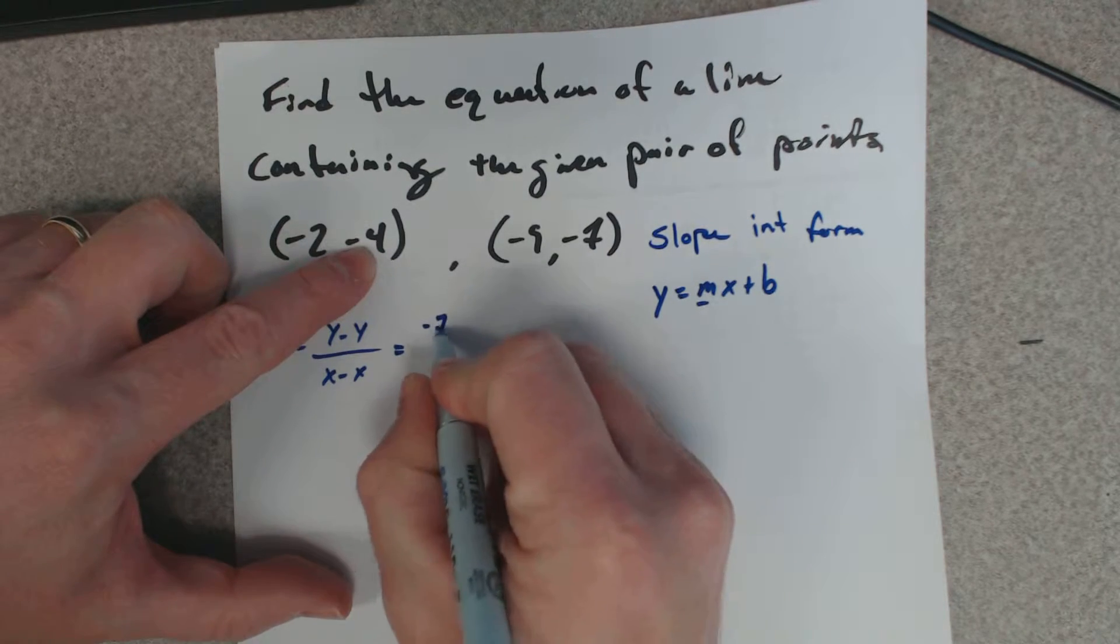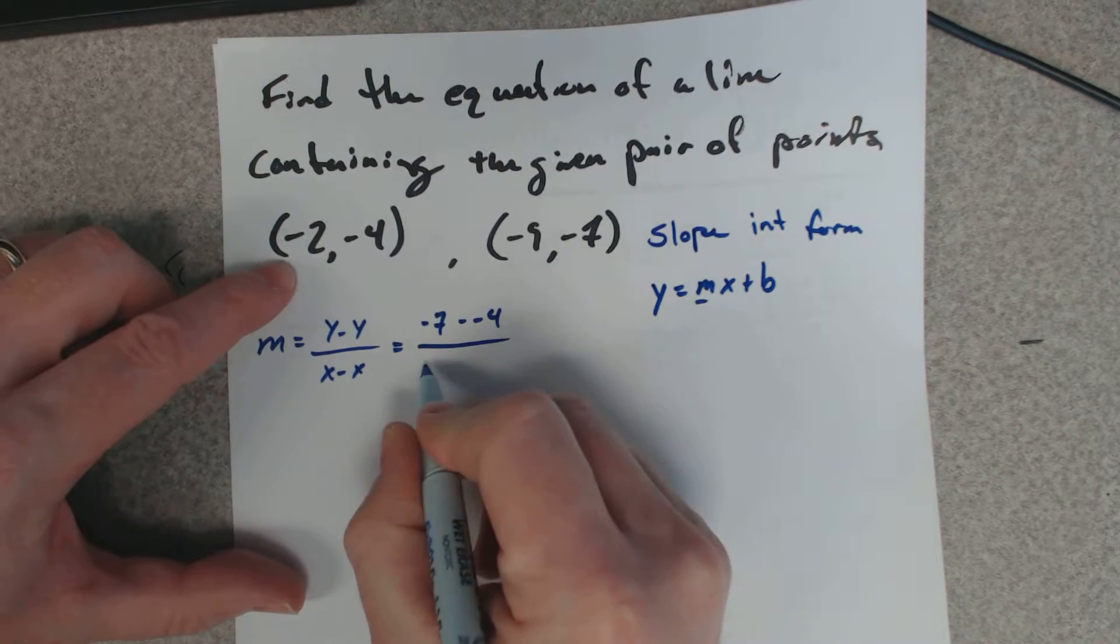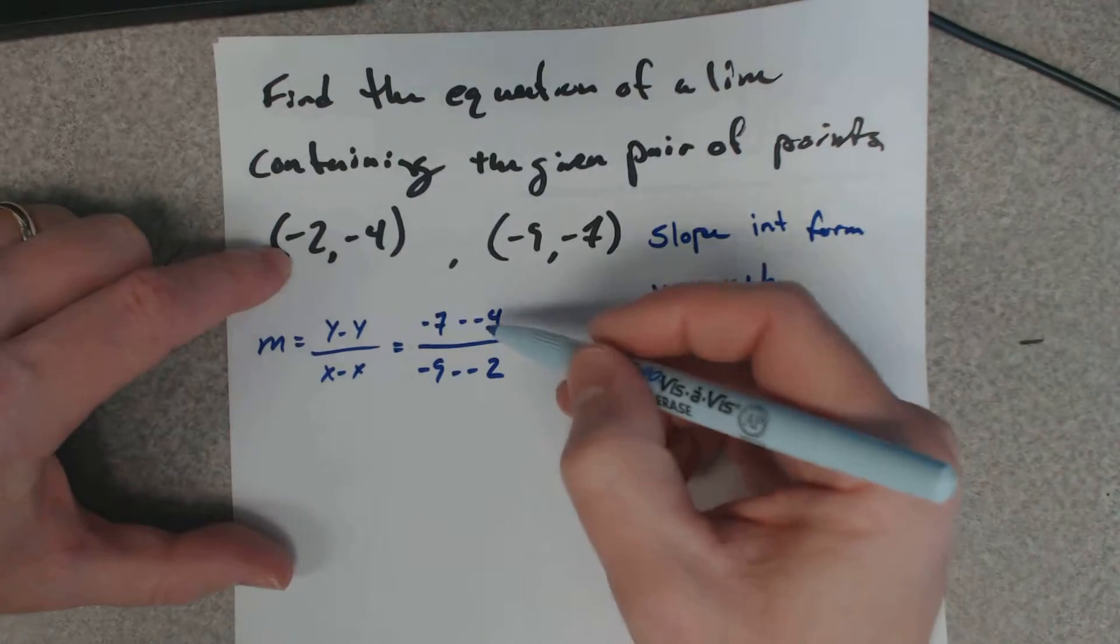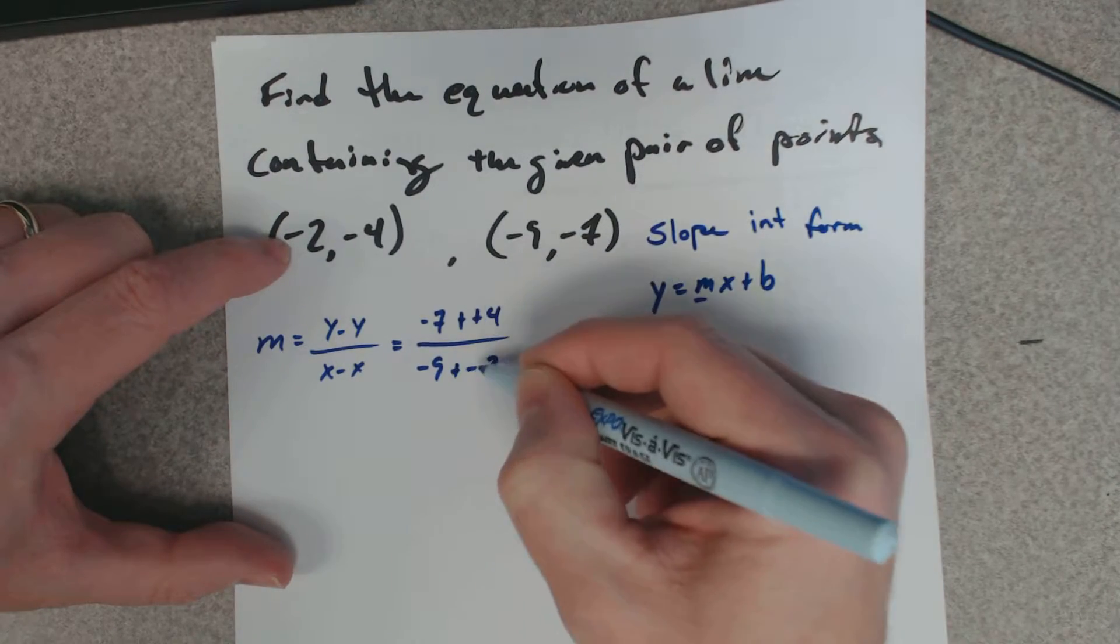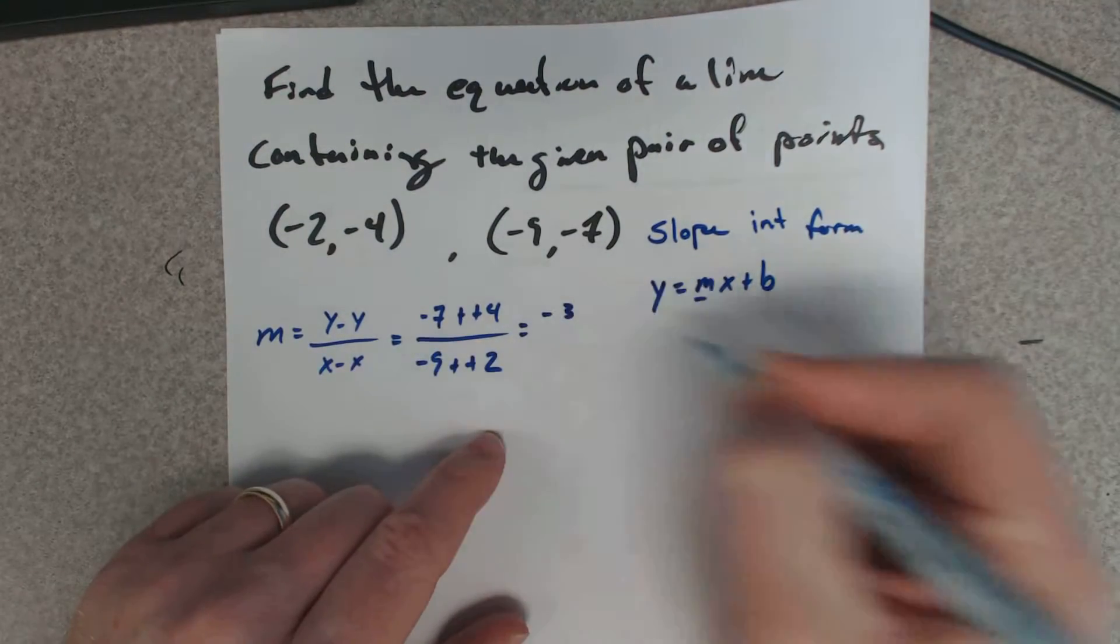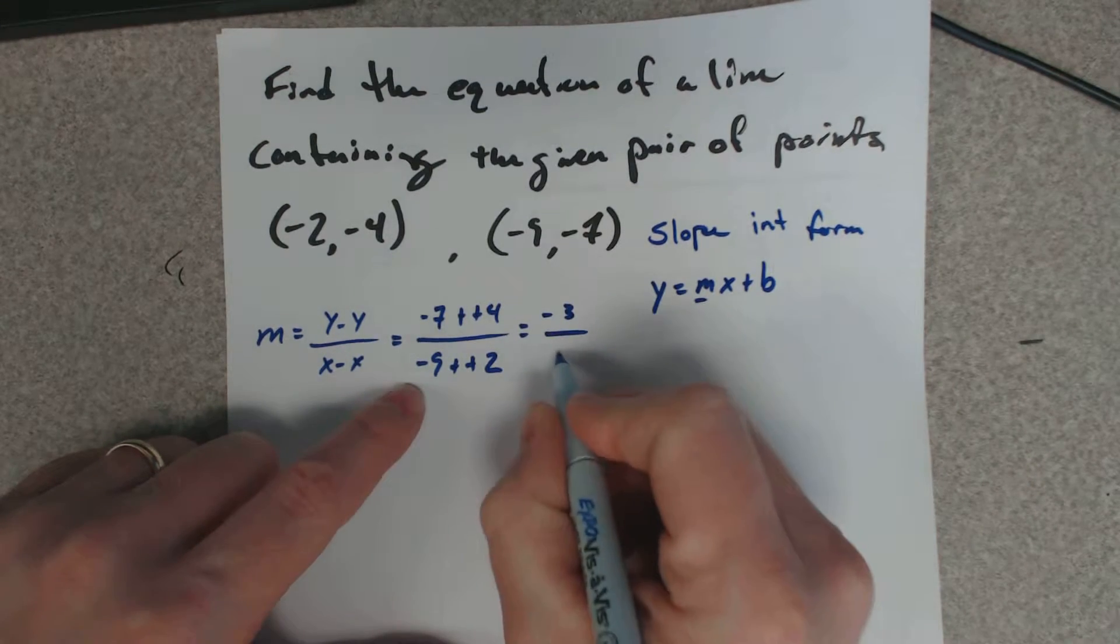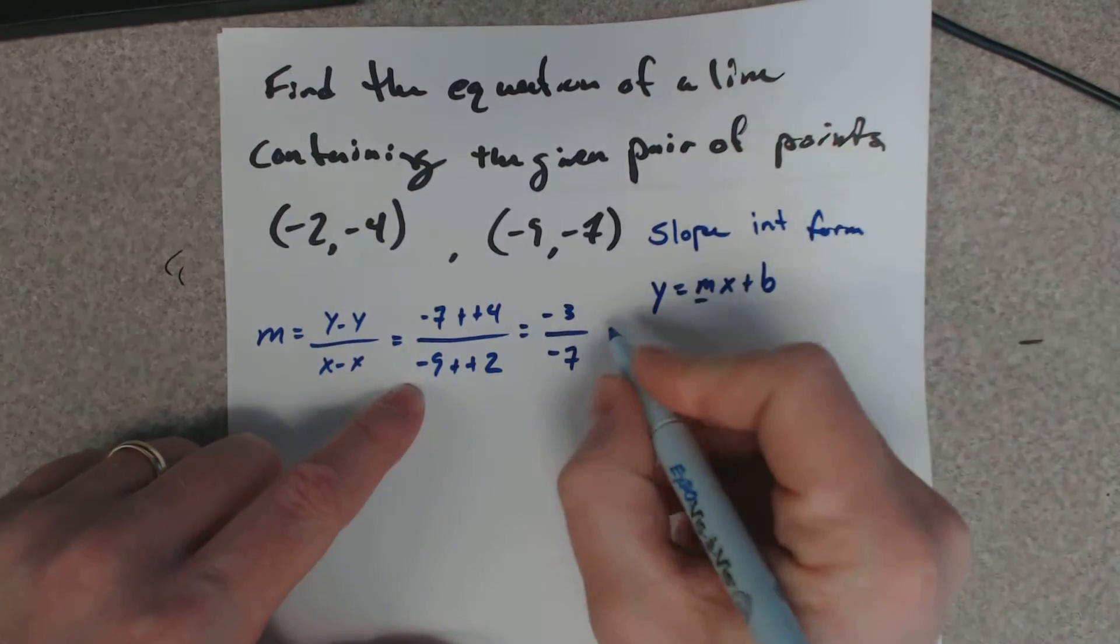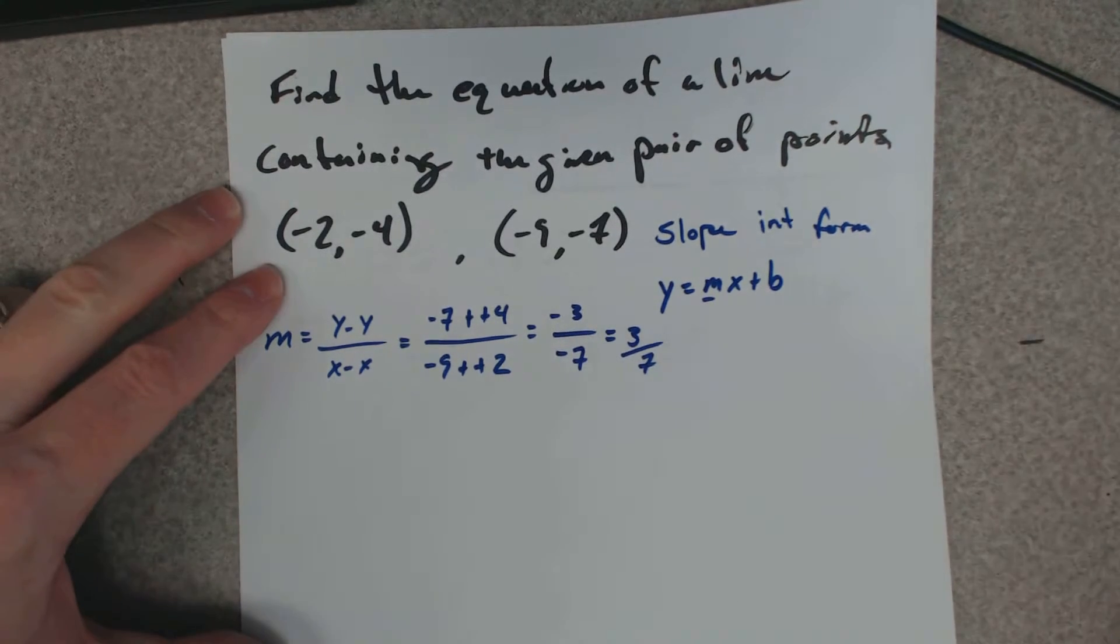So we're going to subtract our y values: negative 7 minus negative 4, and our x values, negative 9 minus negative 2. Whenever I see two negatives together, I'm going to say they're pluses. Remember how two negatives make a plus. So negative 7 plus 4 is negative 3. Negative 9 plus 2 would be negative 7, and two negatives divided by each other make a positive value of 3/7. So our slope is 3/7.